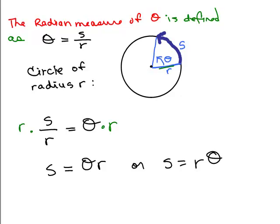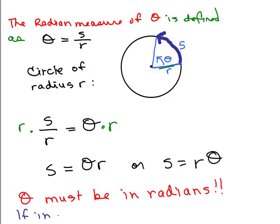But it's very important that this definition comes from the radian measure of theta. So theta must be in radians, which is a real number. So you have to have your angle in radians, it cannot be in degrees. So if in degrees convert to radians before you put it in this formula.